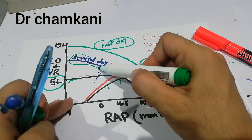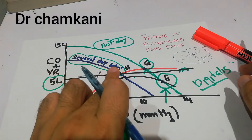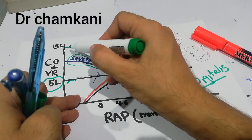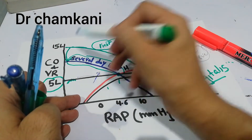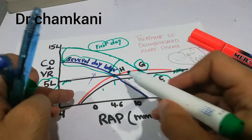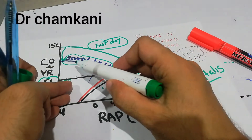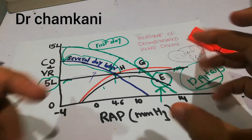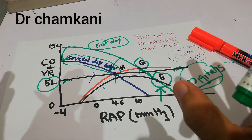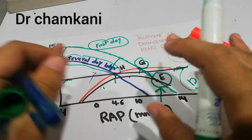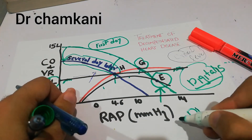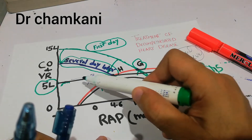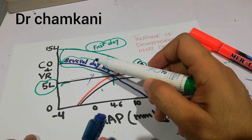Several days after starting the treatment, the cardiac output has increased to the critical 5-liter mark. At the same time, the venous return curve has also come down. The new cardiac output curve is meeting the venous return curve at this new compensated point. This is achieved with the help of digitalis, which increases the pumping effectiveness of the heart, allowing it to pump 5 liters per minute. The kidneys are then adequately perfused and diuresis — urine formation — begins, so the kidneys no longer retain fluid.